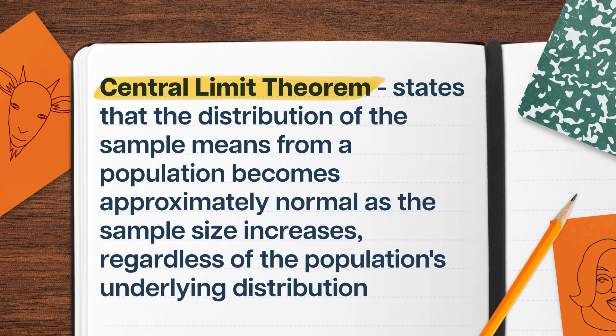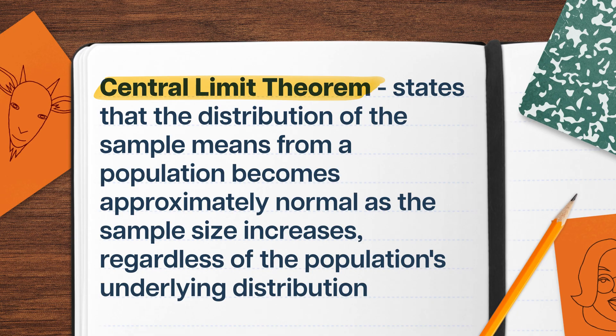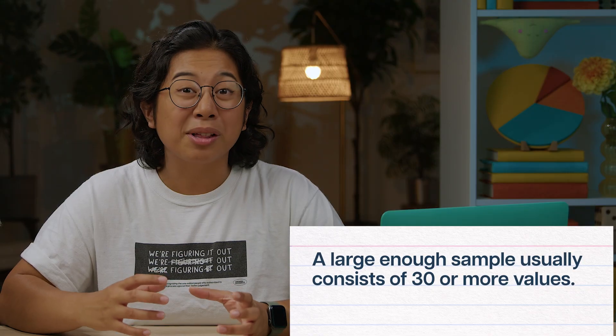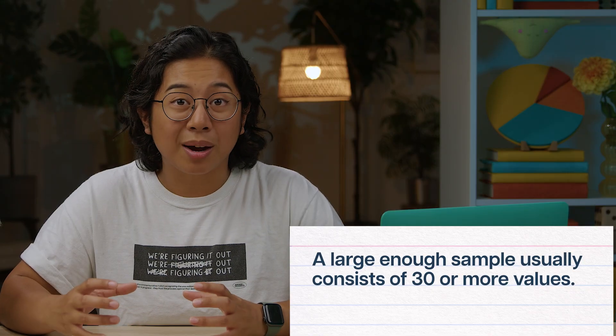Put another way: you have some underlying statistical distribution, even if it's not a normal distribution. When you take a large enough sample — usually just like 30 or more — and calculate the mean outcome or the sum of many outcomes, the distribution of those samples falls into a normal distribution.